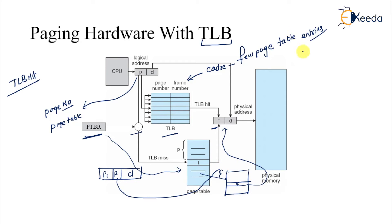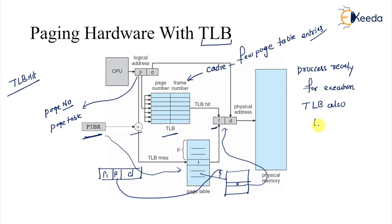In TLB hit, you will directly get the frame number. In the case of TLB miss, we have to follow the entire path for getting our frame number. Every time when a process is initialized and is ready for execution, the TLB is also initialized, so that we can make it faster.